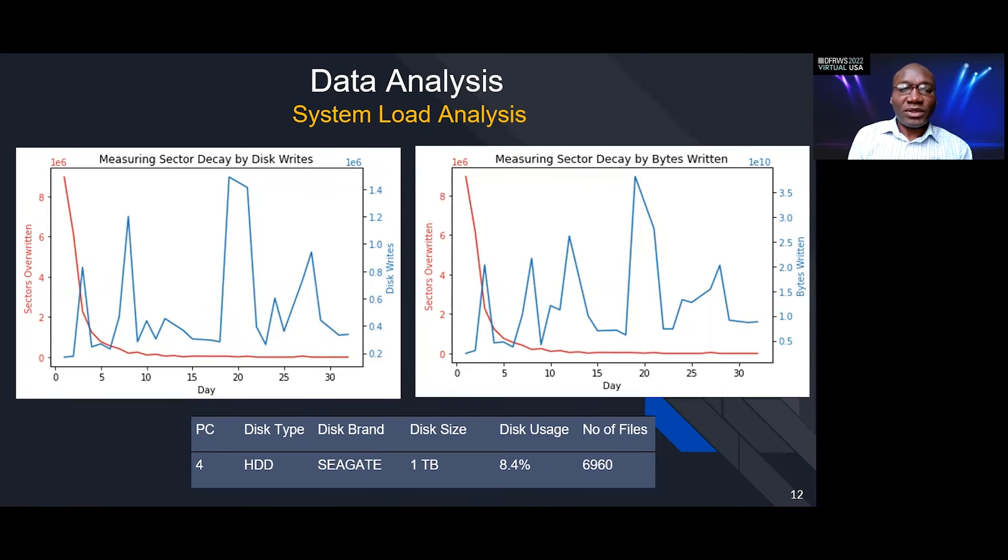In this other computer, we do not see a significant correlation between writing to the drive and the sectors that are decaying. This could be because this is a really large drive, one terabyte, less than 10% of capacity utilization. It is possible that the sectors that we're monitoring are residing on one part of the drive, and then the data that we are writing to the drive is also being written to a different part of the drive. So there is actually no correlation because we're working with two different locations on the drive.